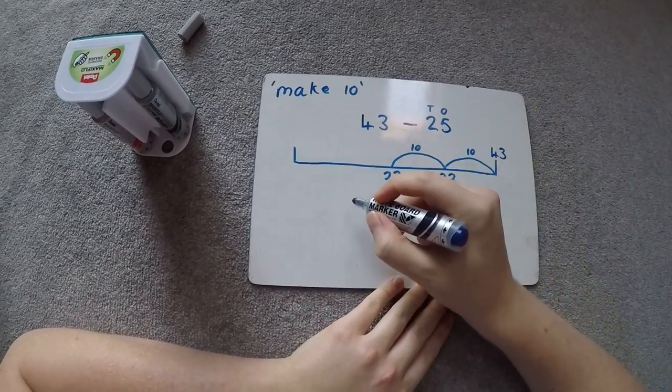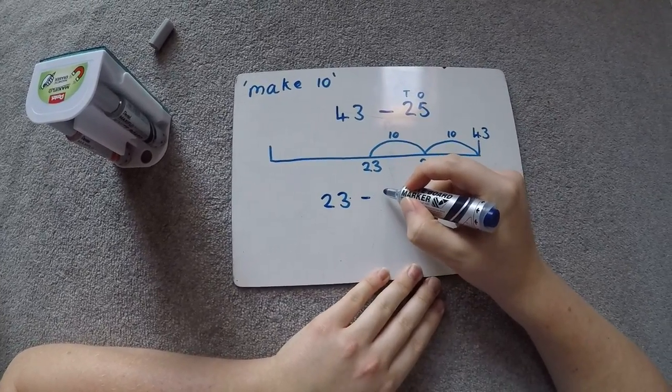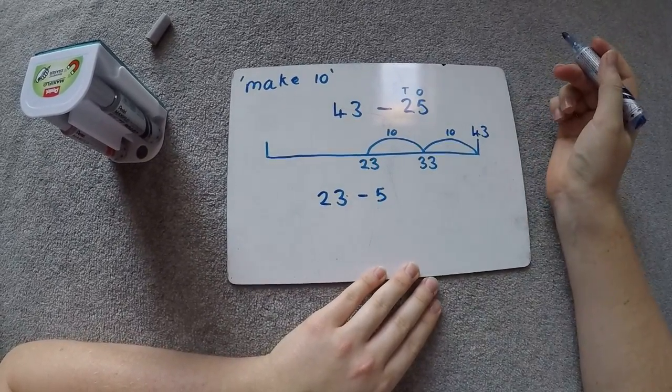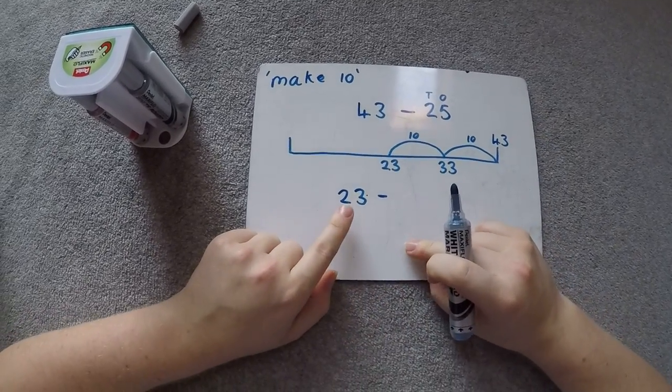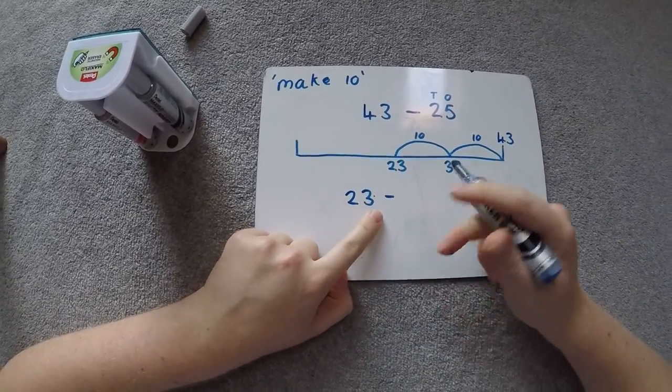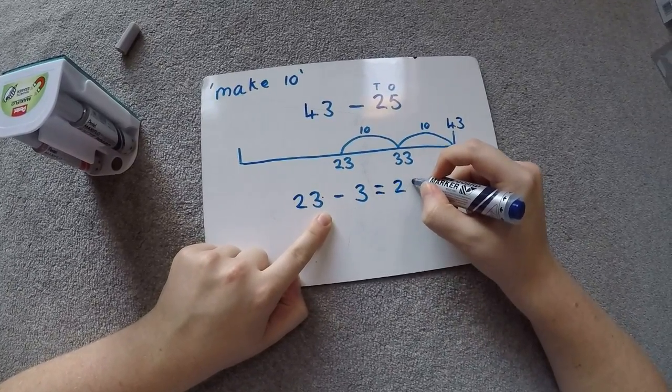So we've just taken away our ones. 23 take away our 5. Well, if we know in order to get down to the next multiple of 10, we're going to need to take away 3, which will leave us with 20.